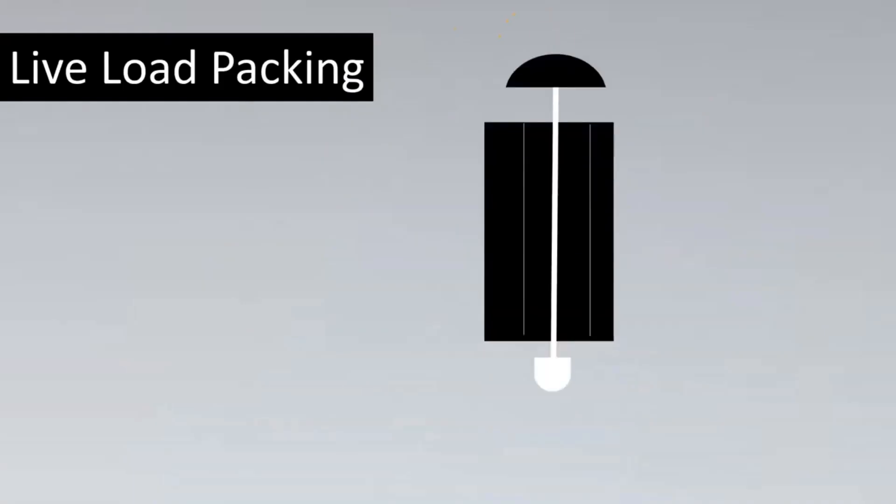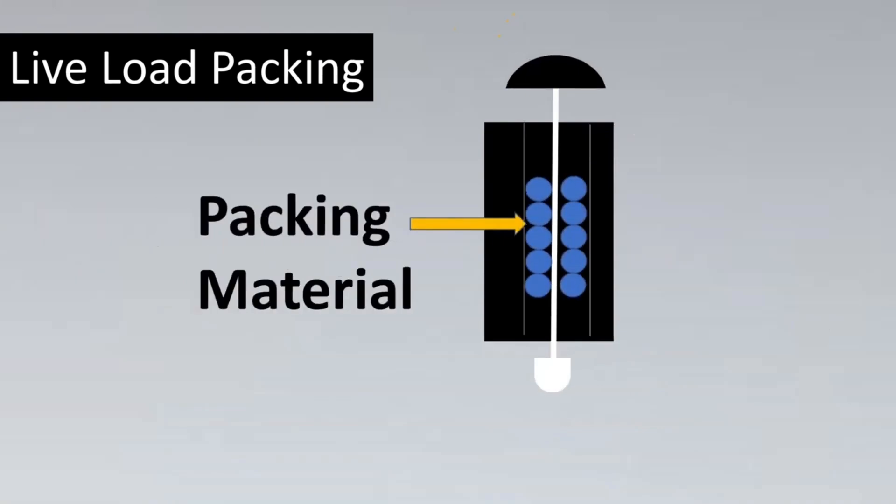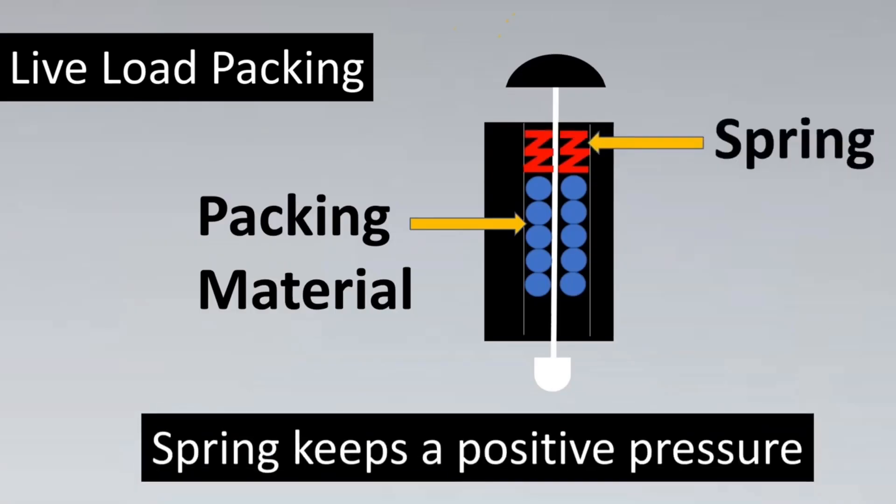Let's look at the first one, which is called live load packing. Here's my packing material which is put in the valve. The valve in normal operation will keep on operating, throttling the valve and the flow through it. But eventually the packing is going to get worn out and maybe it's not able to provide that much pressure. Engineers came up with a spring which creates a positive pressure on the packing material.